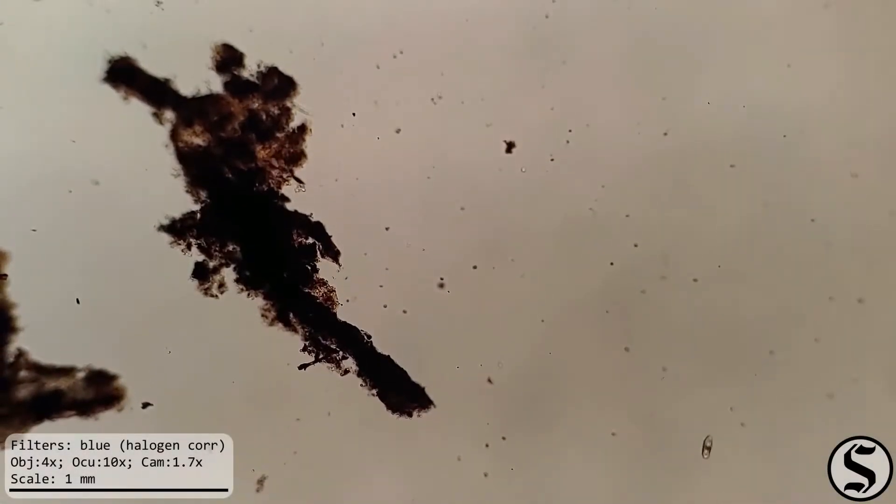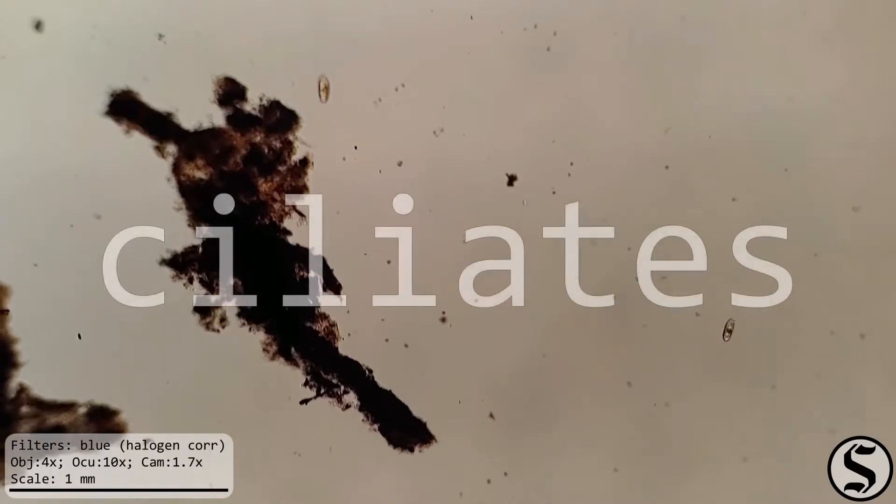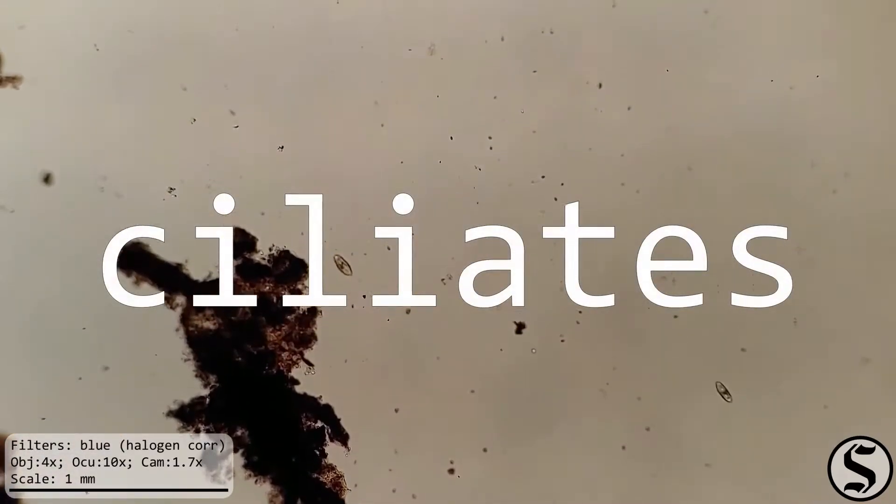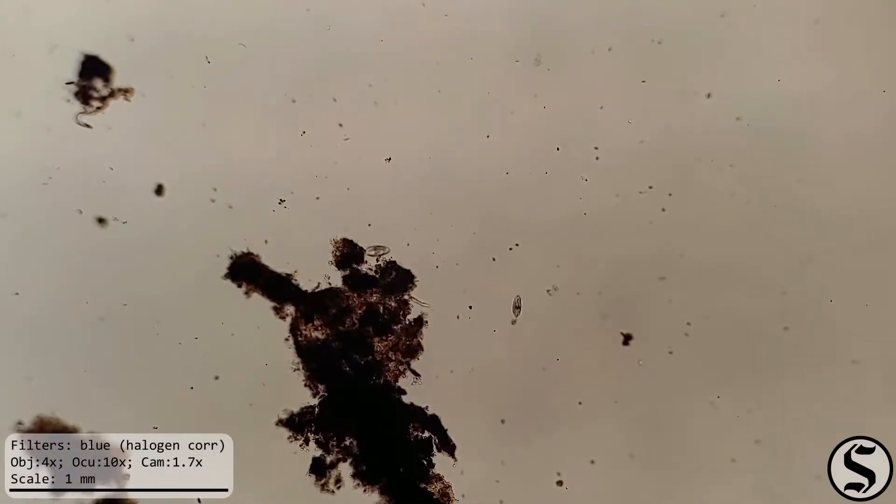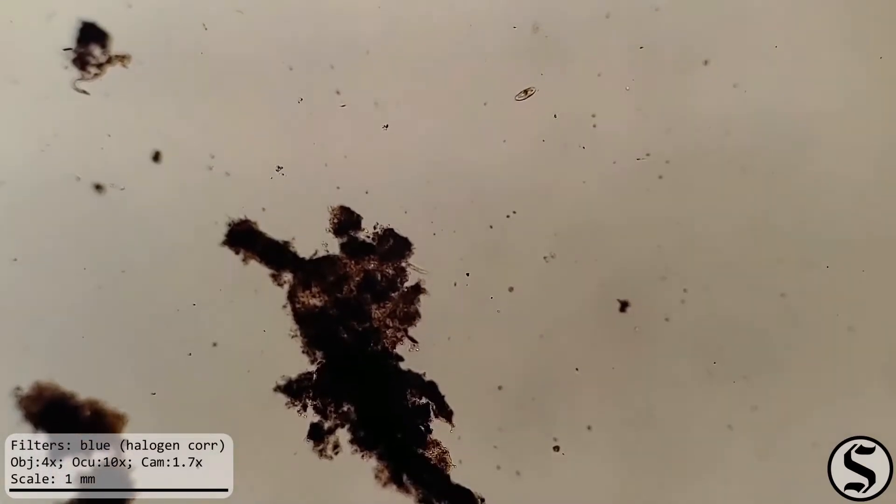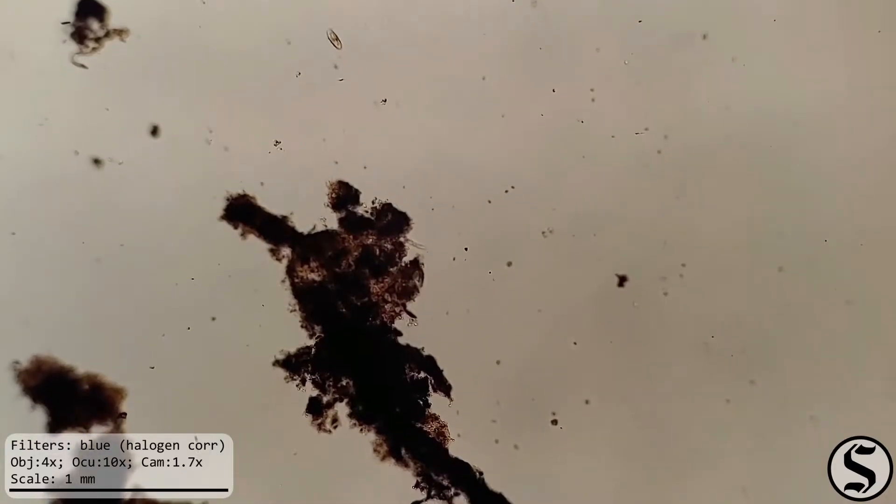Under the microscope we notice that we've got ciliates swimming around in here. Cilia, remember, is Latin for eyelash, and they tend to hang out around these clumps of sediment. They know there's good eatings to be had around there.